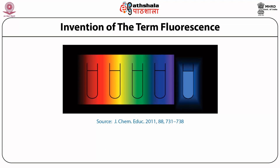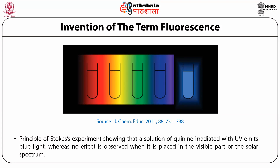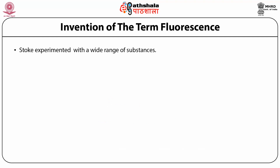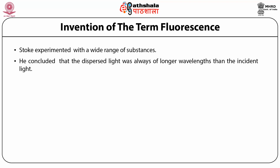This diagram shows the principle of Stokes' experiment — the solution of quinine irradiated with UV emits blue light, whereas no effect is observed when it is placed in the visible part of the solar spectrum. Stokes experimented with a wide range of substances and concluded that the dispersed light was always of longer wavelength than the incident light. This statement later became Stokes' law, and the observation that fluorescence emission is of longer wavelength than the exciting light led to this displacement being called the Stokes shift.